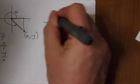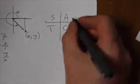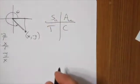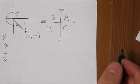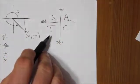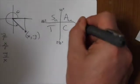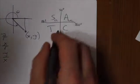To summarize what we've just seen, the rule we introduce is the CAST rule. When the terminal arm is in the first quadrant, all trig ratios are positive. In the second quadrant, between 90 and 180 degrees, only sine is positive. From 180 to 270 degrees, only tangent is positive. And from 270 to 360 degrees, only cosine is positive. That's the CAST rule — Cosine, All, Sine, Tangent.